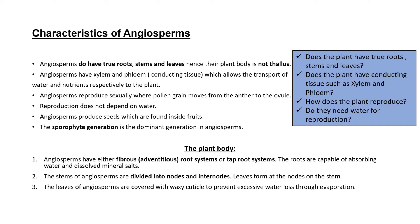Let's look at what characteristics angiosperms have. The first criterion is whether the plant has true roots, stems, and leaves — this refers to the plant body. If a plant has true roots, stems, and leaves, it is not thallose. Angiosperms do have true roots, true stems, and true leaves, hence their plant body is referred to as not thallose.